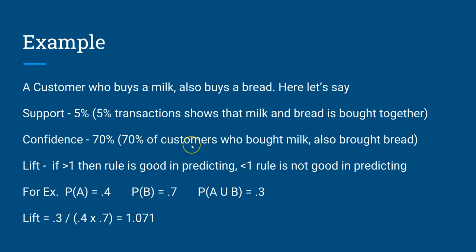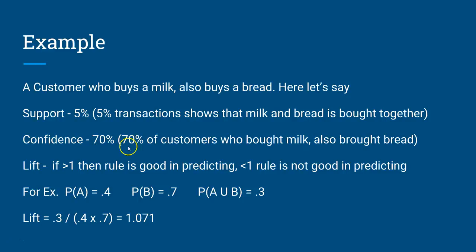For confidence, if it is 0.7 or 70%, that means 70% of customers who bought milk also bought bread. The condition here is that when they are buying milk, in 70% of cases they are also buying bread. That's how you interpret confidence.